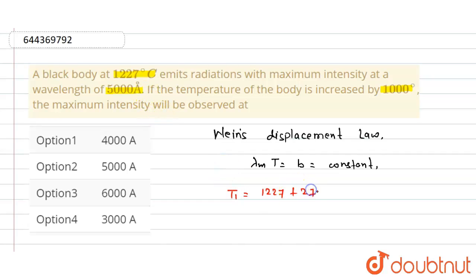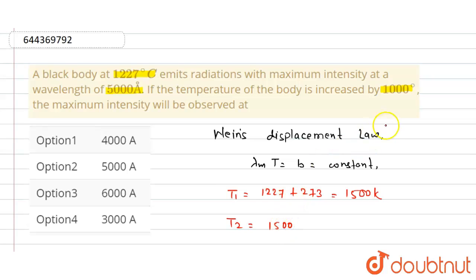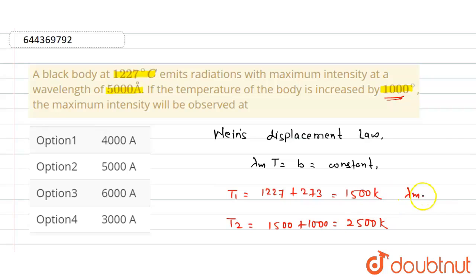So T1 is 1227 plus 273, which gives 1500 Kelvin. Similarly, T2 is 1500 degrees Celsius increased by 1000 degrees Celsius, so T2 equals 1500 plus 1000, which is 2500 Kelvin.